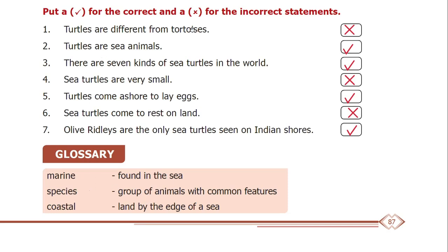Turtles and tortoises have the same features, but there is a little difference: if the tortoise is on land, the turtle is in the sea. This is called a family or species — a group of animals with common features. Next, coastal: coastal is land by the edge of the sea — the area at the edge of the sea is what we call coastal.